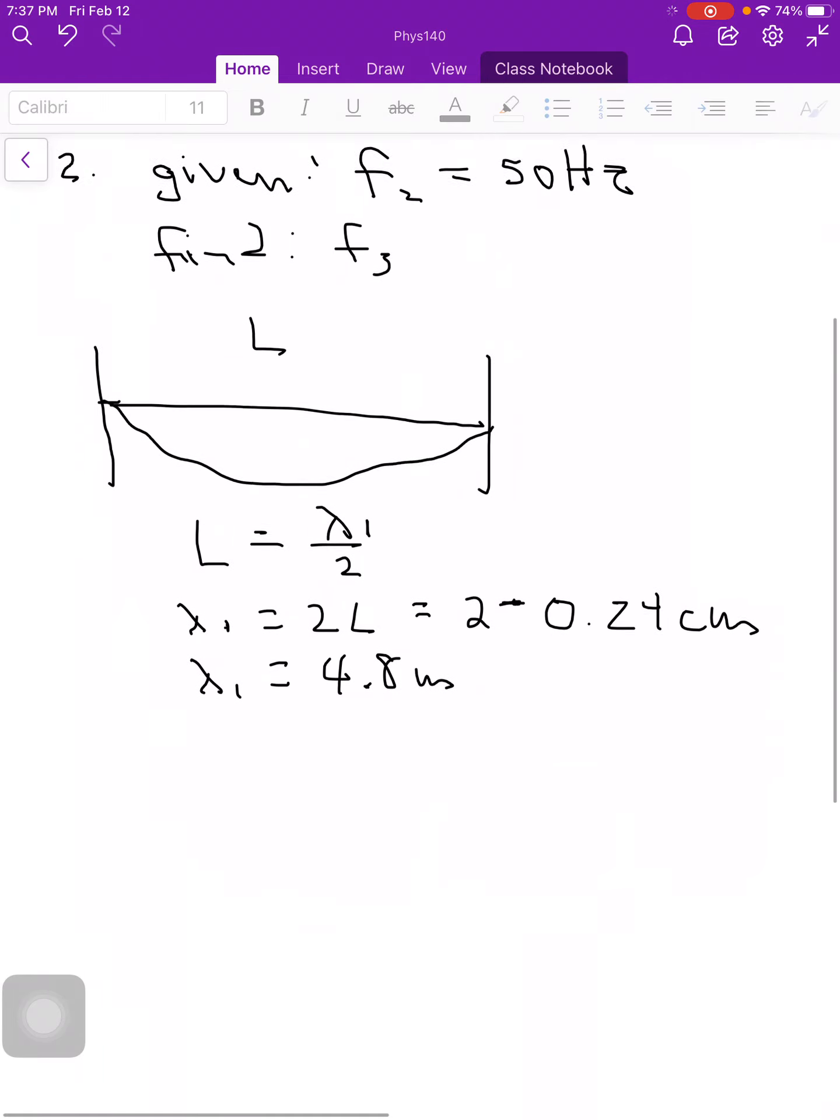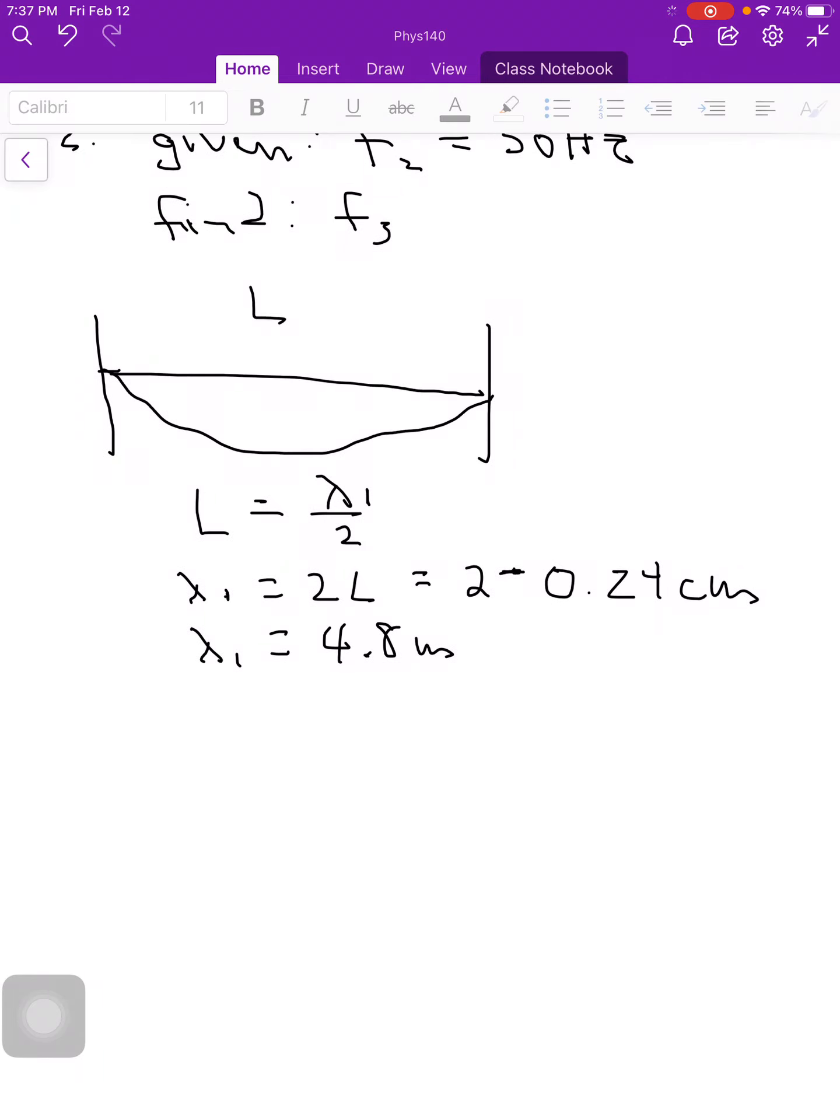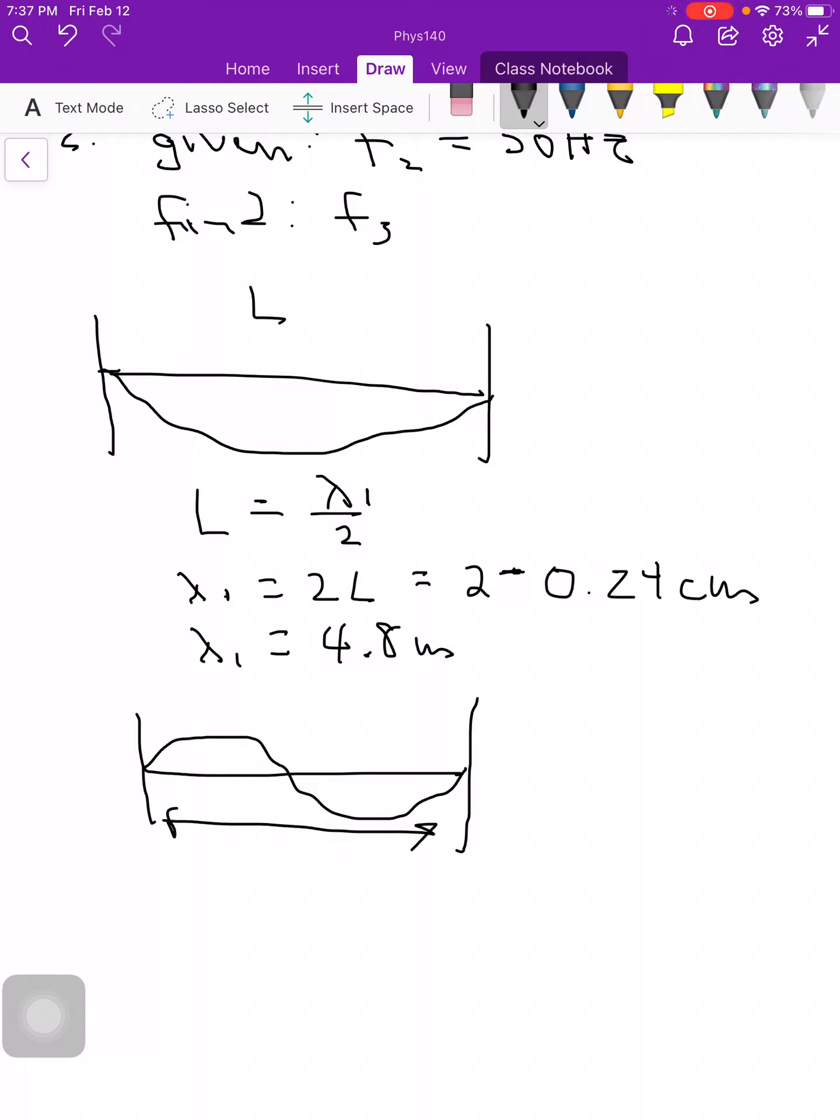Now what about lambda 2? The next one, the next longest wavelength. It's going to look like this. All right, so we've got this distance here is going to be L. Now same L, I guess the lambda is different. So we're going to have L is equal to lambda, so now L then is going to equal 2.4 centimeters.